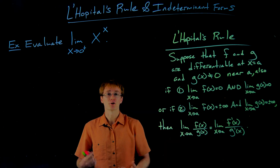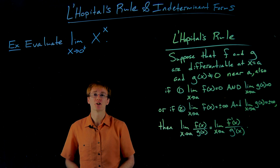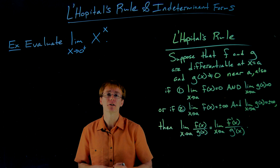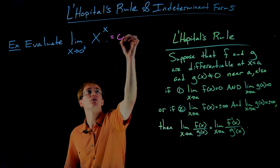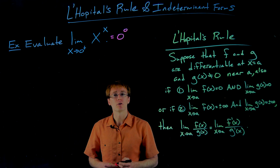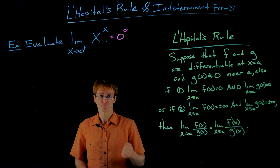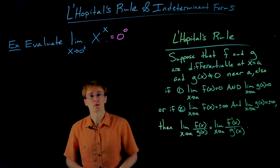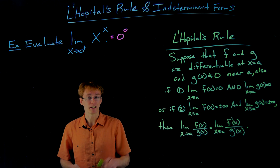Now let's evaluate the limit as x approaches 0 from the right of x to the power of x. Trying direct substitution, we get 0 to the power of 0 — one of those less common but still indeterminate forms. A strategy that works well here is using properties of exponents and logarithms to manipulate and rewrite your limit.